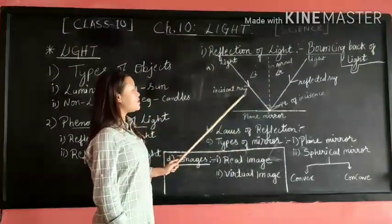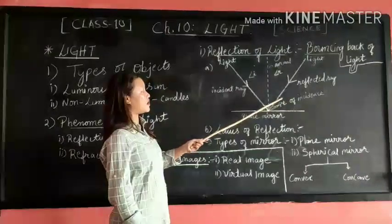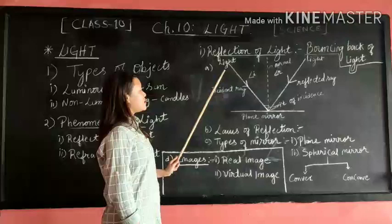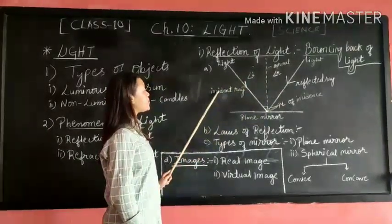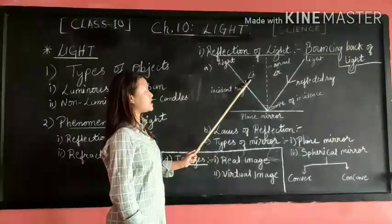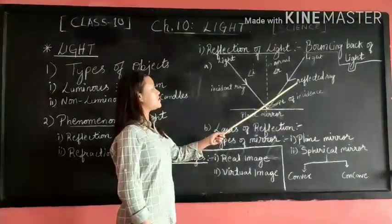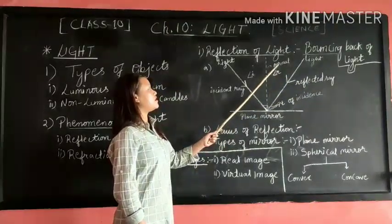And then the angle between the incident ray and the normal, this particular angle, is known as angle of incidence. The angle between the reflected ray and the normal is known as angle of reflection.